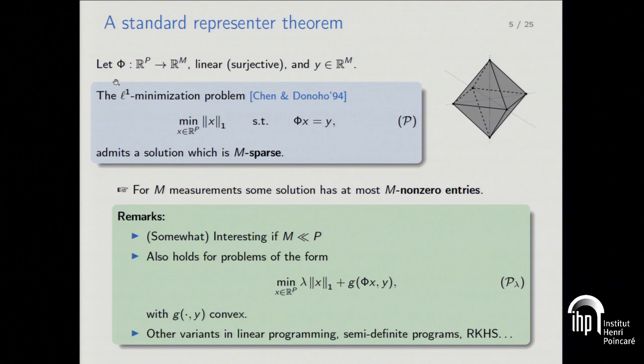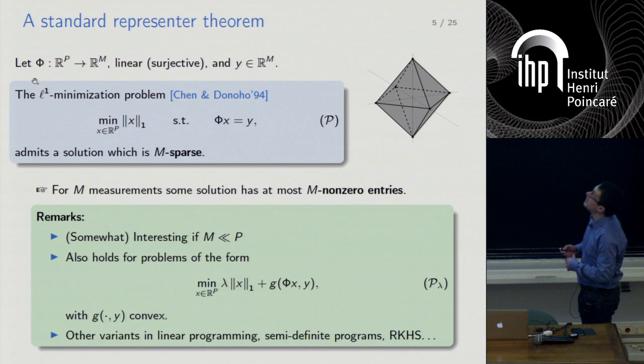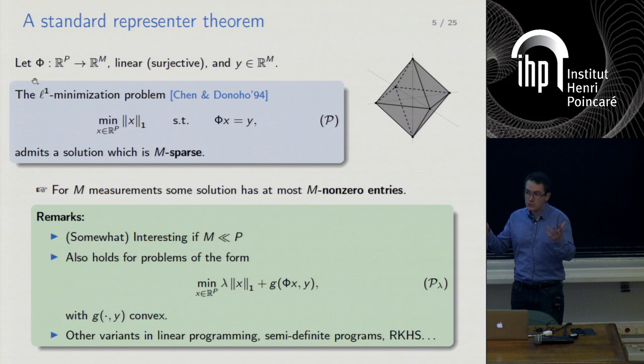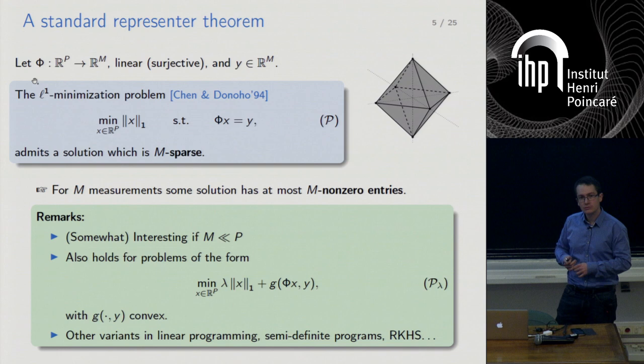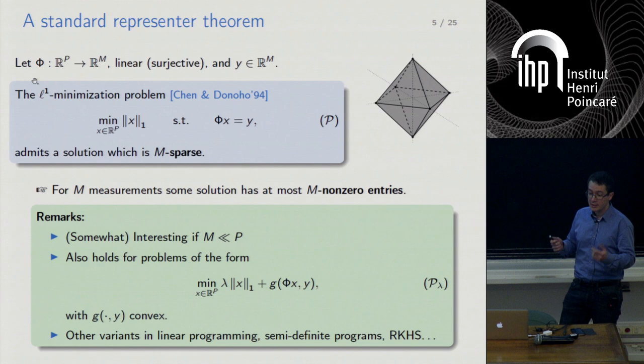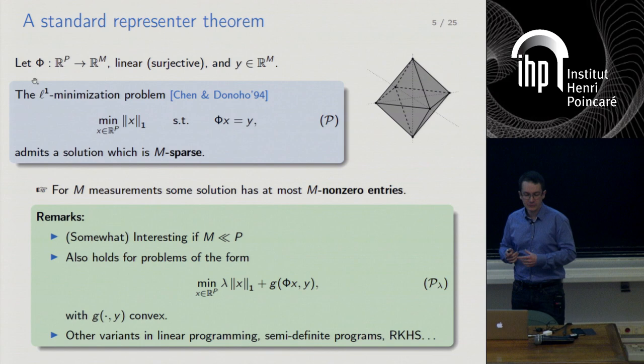First I will explain what I mean by the representer theorem. There are many representer theorems in the literature, and I will try to elaborate a general principle, then explain how it relates to an old theorem from the 1960s by Dubins-Saint-Klee, and eventually specialize it to total variation imaging.